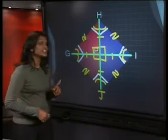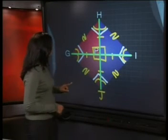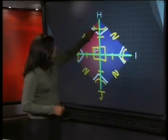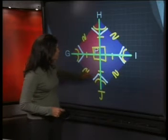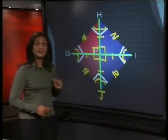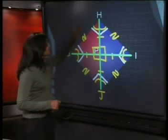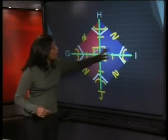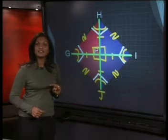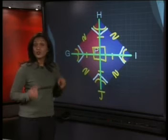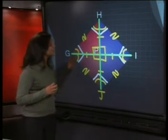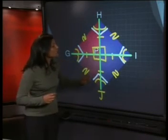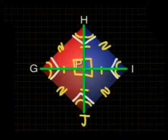Now look at the vertex angles of the square. Each of these angles is equal to one another, and this means that the angles are all bisected by the diagonals. So we can say that the diagonals cut these angles into two equal parts — or bisect them. We say that the diagonals bisect the angles of the square.